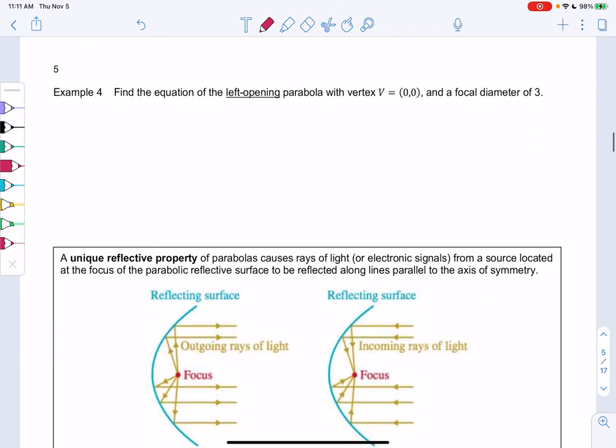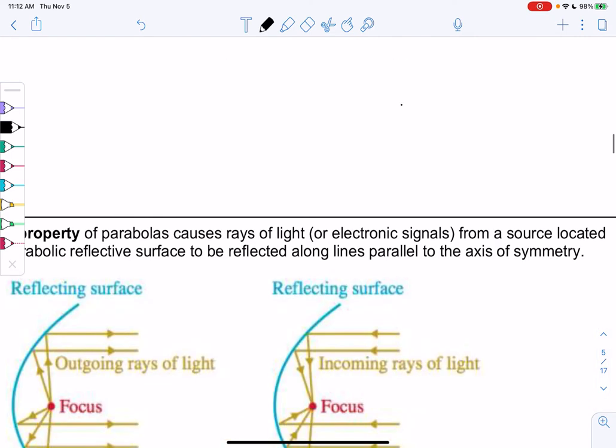So let's find the equation of a left opening parabola. So left opening means c is negative. And it also means that it's y² = 4cx with c negative. So those are things I noticed immediately when we talk about it being left opening. The vertex is (0, 0).